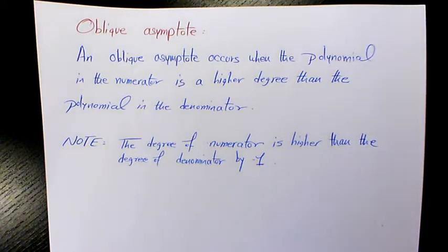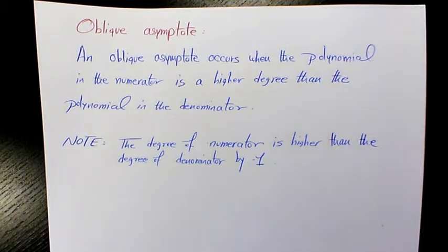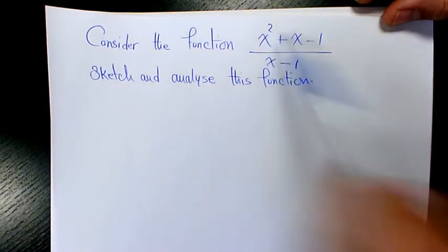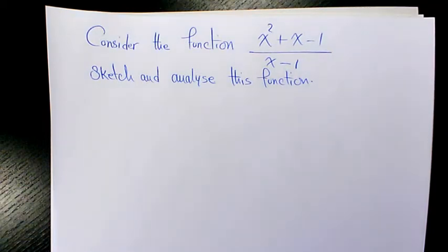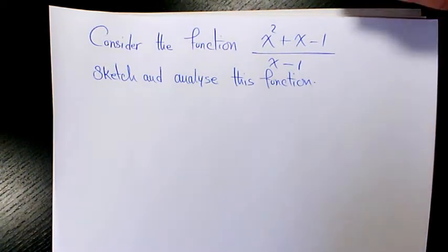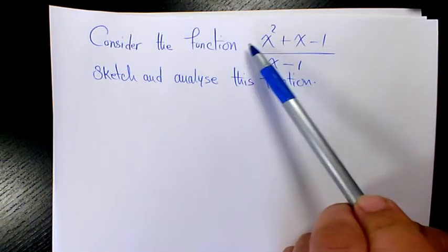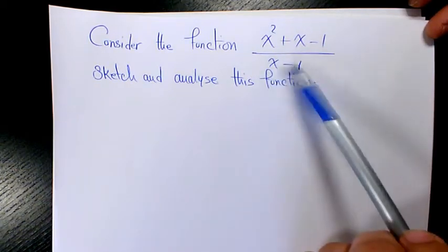We are dealing with a rational expression — a polynomial in the numerator and a polynomial in the denominator — where the degree of the polynomial in the numerator is greater than the degree of the polynomial in the denominator by one. Let's see some examples. The first example: consider the function (x² + x − 1) / (x − 1). The degree of the numerator is 2 and the degree of the denominator is 1.